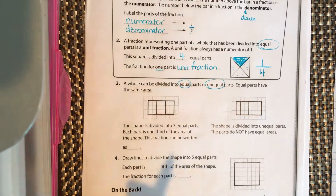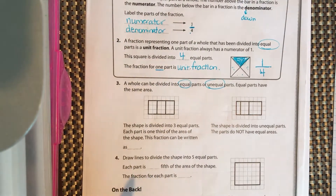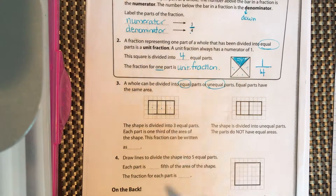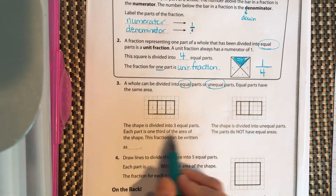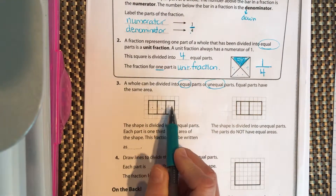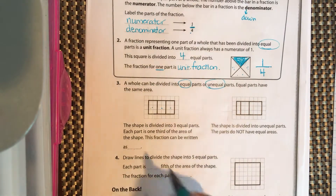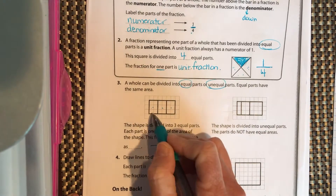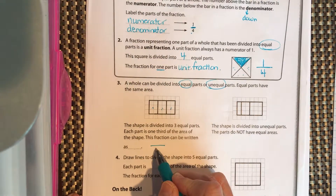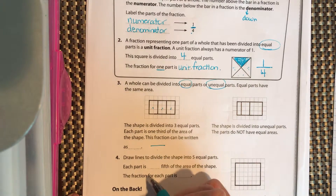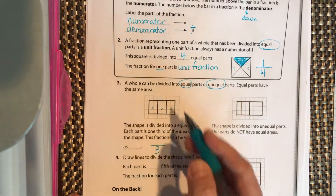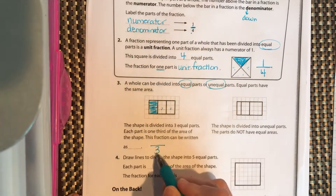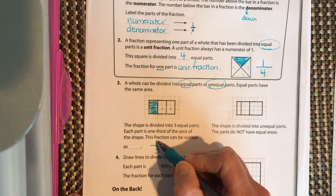A whole can only be divided into equal parts when dealing with fractions — equal parts have the same area. Here the shape is divided into three equal parts: one, two, three. Each part is one third of the area of the shape. The unit fraction is written with a denominator of three and a numerator of one, since one part is shaded.